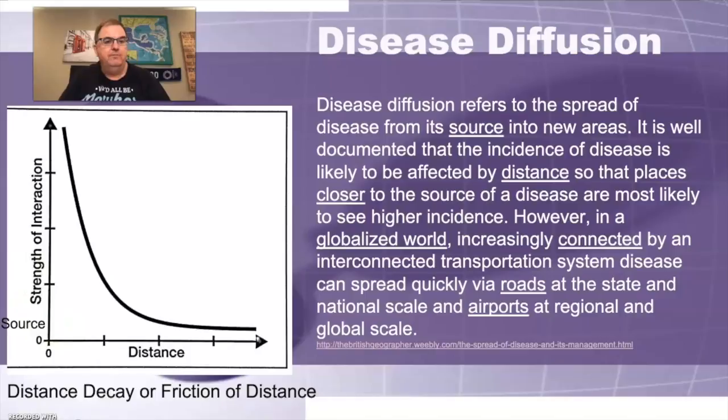When we look at friction of distance here, the closer in proximity that people are to the source, we usually see a higher incidence of infections that occur. Usually the further away you go, this results in a lower number of incidents within this spread of this disease. However, we live in a super globalized world, interconnected trading society with global connections. And this is transforming some things.